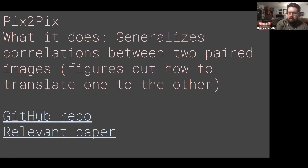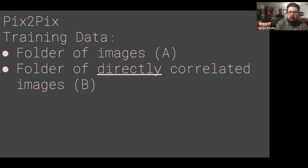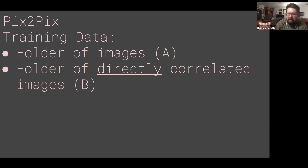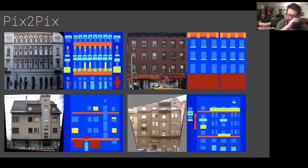There's a GitHub repo and a relevant paper. The training data for this is a folder of images that we would call A, and then a folder of directly correlated images called B. I think it's easier to look at actual examples to understand this.